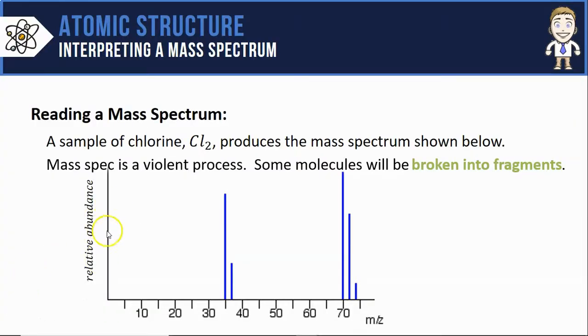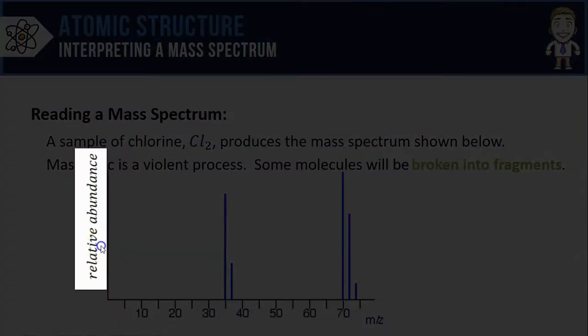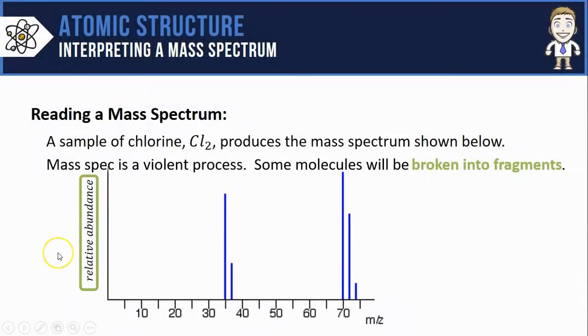The last thing to notice in this spectrum and some others that you'll see is the vertical axis is not percent abundance, instead it's labeled relative abundance. All that means is that the peak height indicates relative comparisons in amount, not actual percentages.